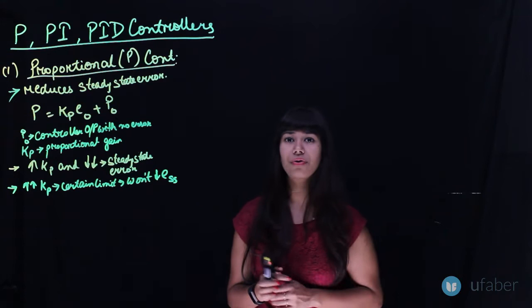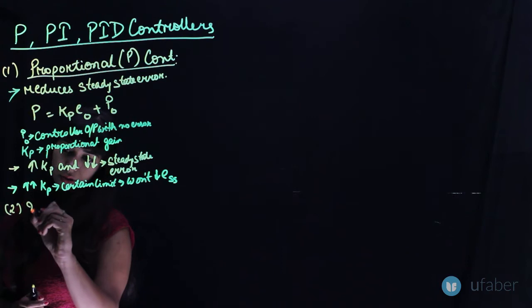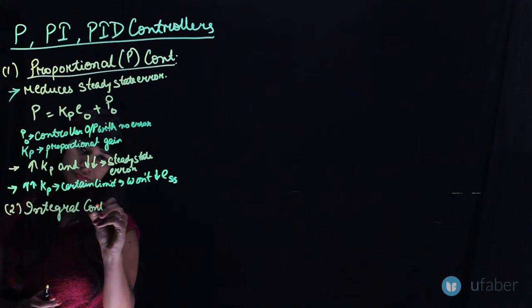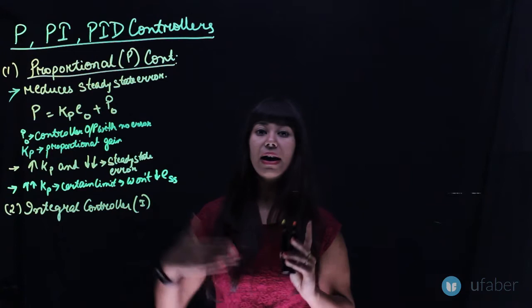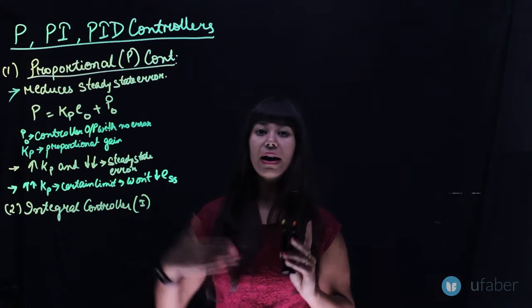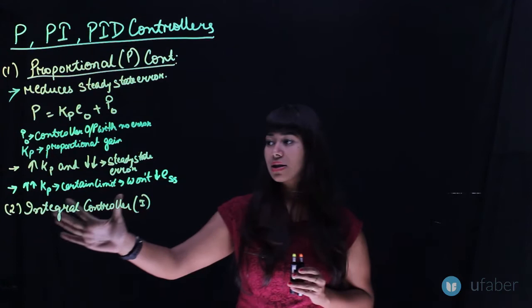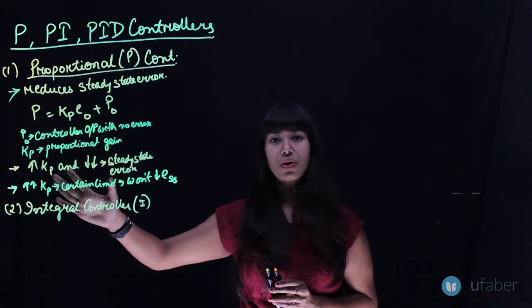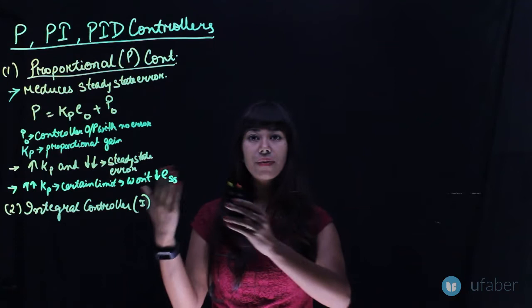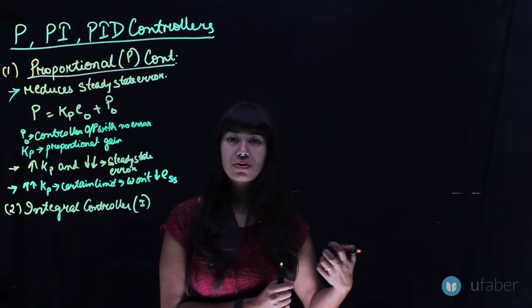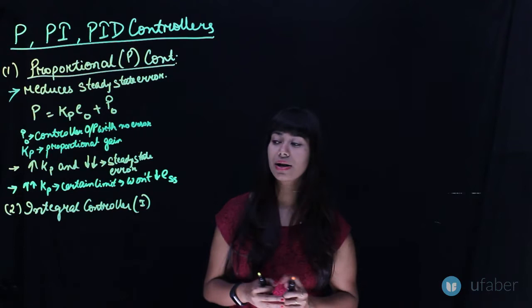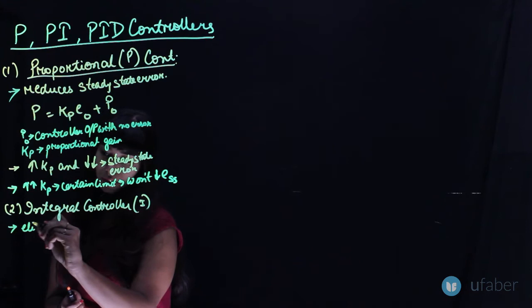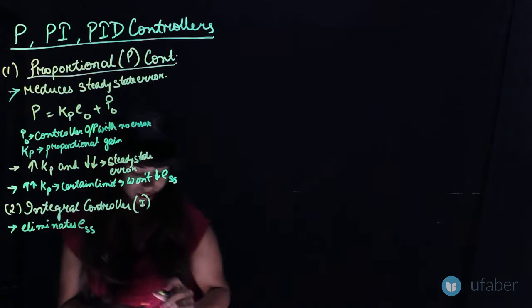Now let us go to the next type of controller: the Integral Controller. There is a reason we talked about the proportional controller first — this controller tries to do what the P controller could not. The integral controller eliminates the steady state error entirely. So we have advanced to a new step where our controller is able to not only reduce but also completely eliminate the steady state error ESS.